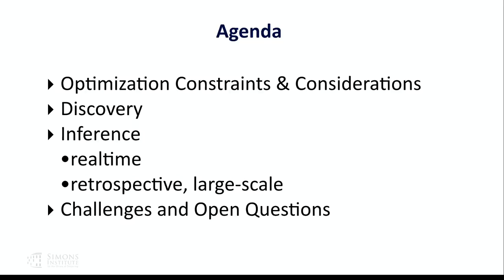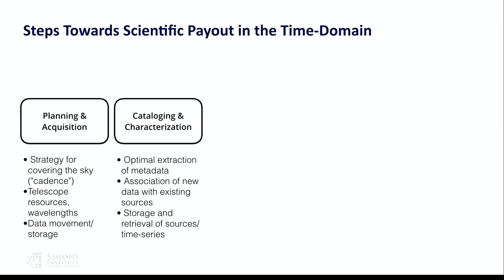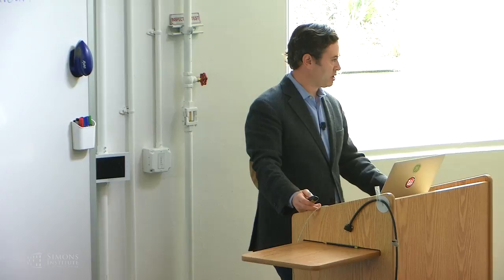Just to level set: the way astronomers actually work involves lots of planning and acquisition of data. What you heard about with LSST and ZTF is figuring out how to observe the sky — what's often called the cadence, meaning how often you repeat an observation of the same part of the sky. There's obviously a trade-off: if you don't go back to the same part of the sky, you'll miss rapidly changing objects, but you have the opportunity to survey a larger area.